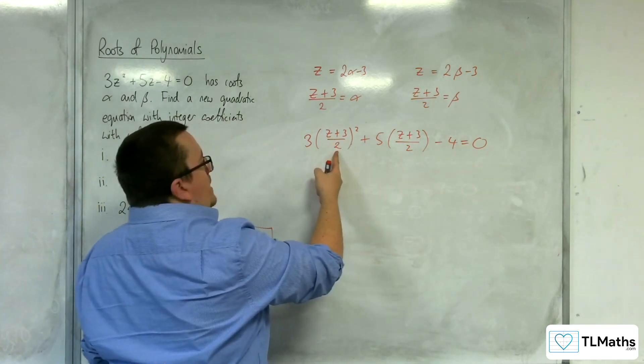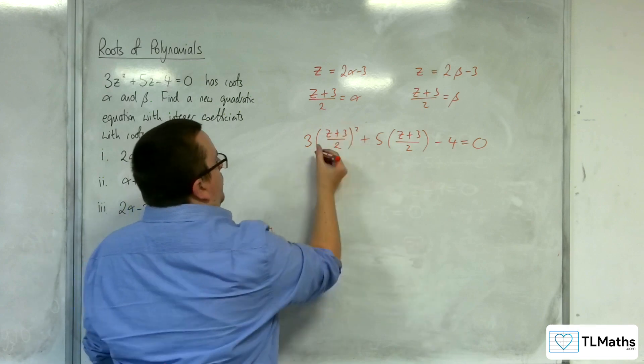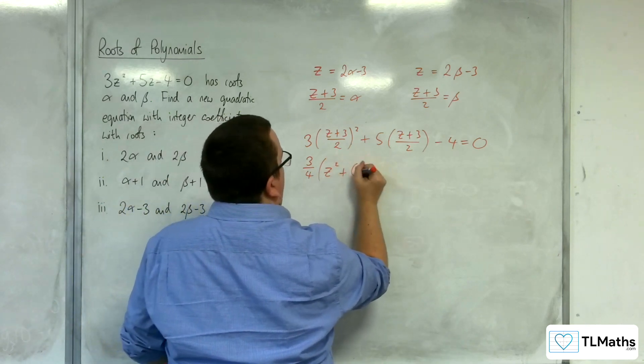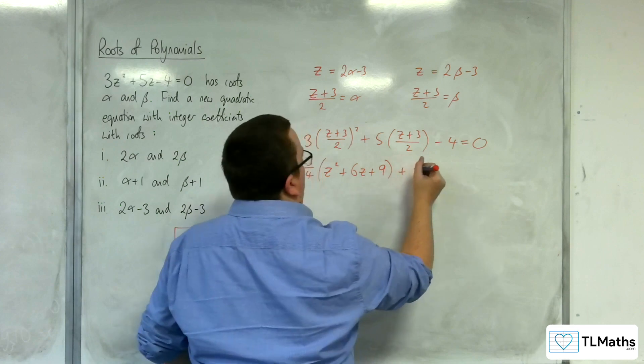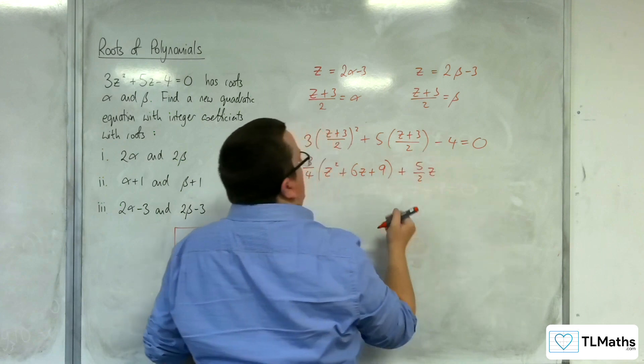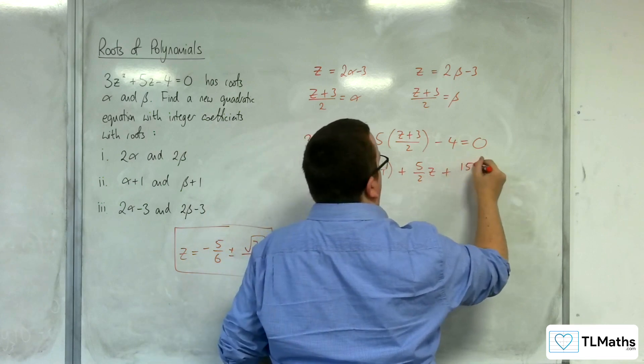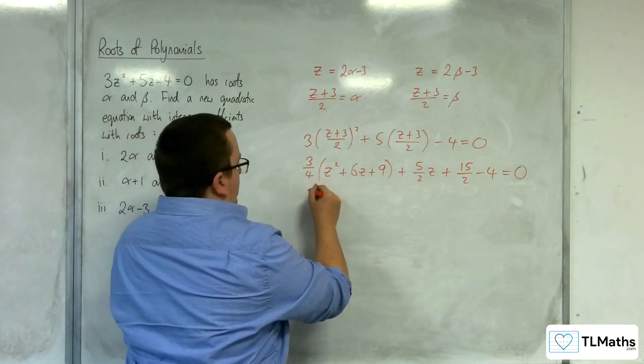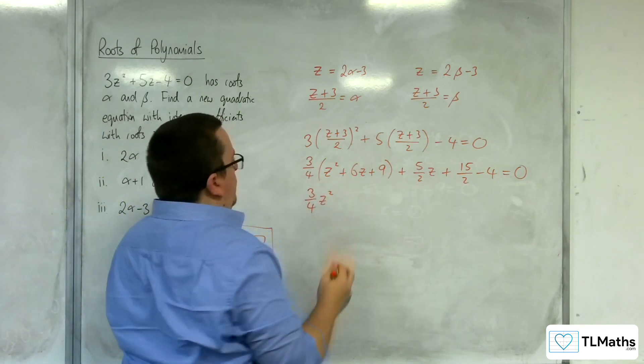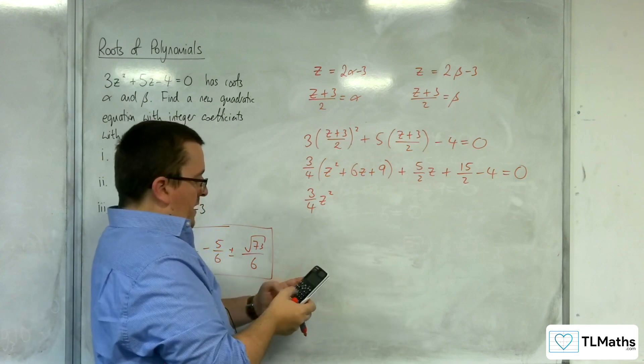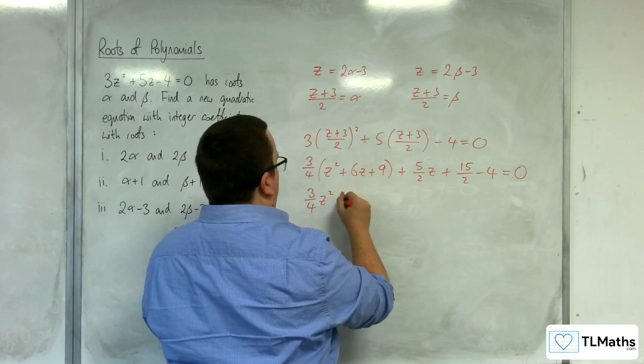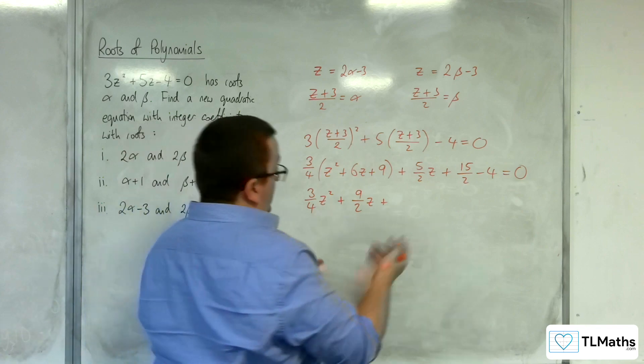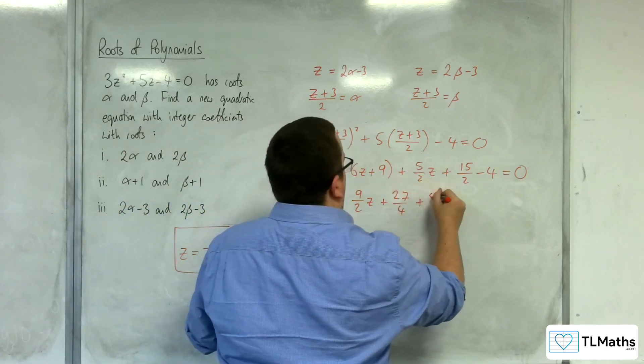So we've got the 1 half here, so squaring that as a quarter. So we've got 3 quarters times z plus 3 squared, which is z squared plus 6z plus 9. And then we've got 5 halves z, and then 5 halves times 3, so plus 15 halves, take away 4 equals 0. So multiplying through, we've got 3 quarters z squared, then we've got 3 quarters times 6, so 9 halves z, and then 3 quarters times 9, so 27 quarters, plus 5 halves times 3, so 15 halves.